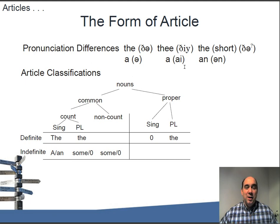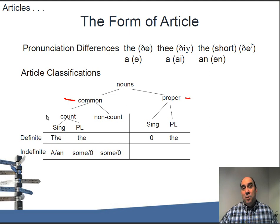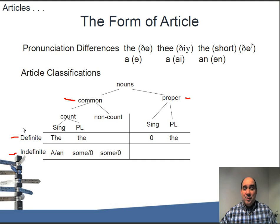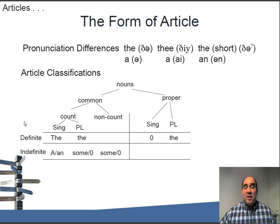There's also a classification structure for articles. We have two basic kinds: common and proper. Proper is just singular and plural. Within common, we have a further breakdown of count and non-count, and also definite and indefinite. Definite is more specific - more understood by all parties involved - and you use 'the' in that sense. For the indefinite, you use 'a,' 'an,' 'some,' or nothing. That's the breakdown your students are going to need to know.